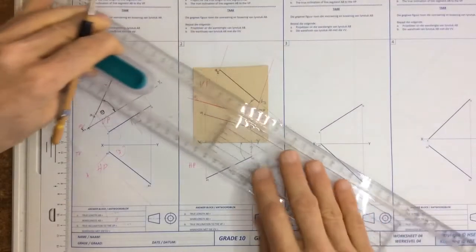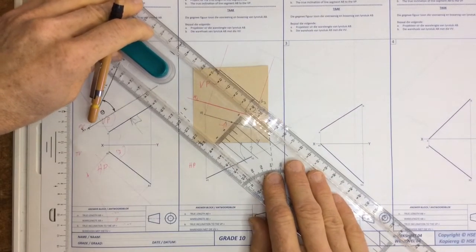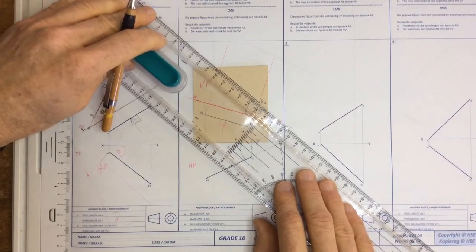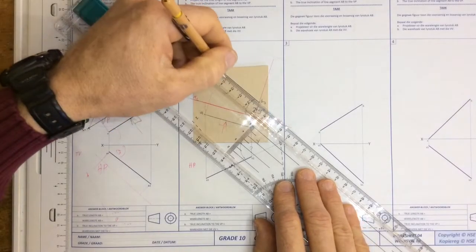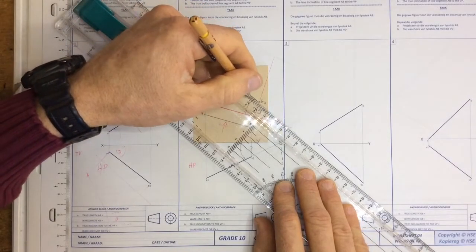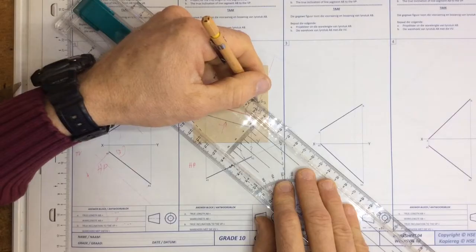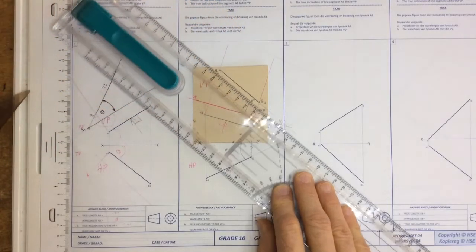I can then also measure off what this length over here is. And I see that it is 10, 20, 30, 40, 48, okay, 48 millimeters.